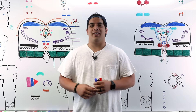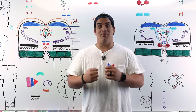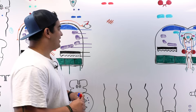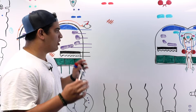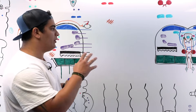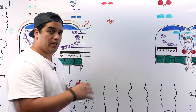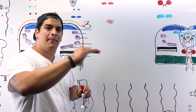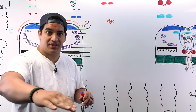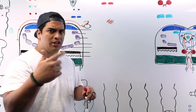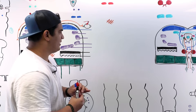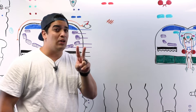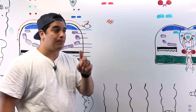In this video we're going to talk about the midbrain. We're going to look primarily at cross sections or transverse sections of the midbrain at two levels: one at the level of the inferior colliculus and one at the level of the superior colliculus.